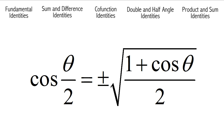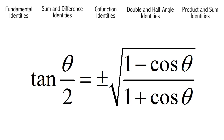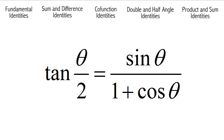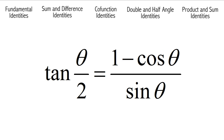Cosine of theta over 2 is equal to plus or minus the square root of 1 plus cosine theta over 2. Tangent of theta over 2 is equal to plus or minus the square root of 1 minus cosine theta over 1 plus cosine theta. Tangent of theta over 2 is equal to sine theta over 1 plus cosine theta. Tangent of theta over 2 is equal to 1 minus cosine theta over sine theta.